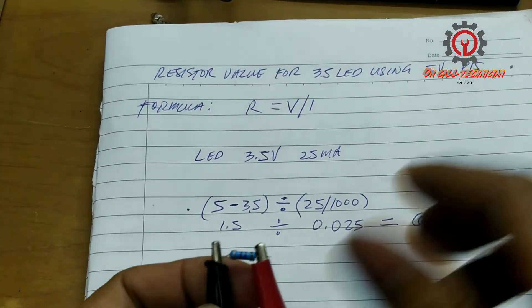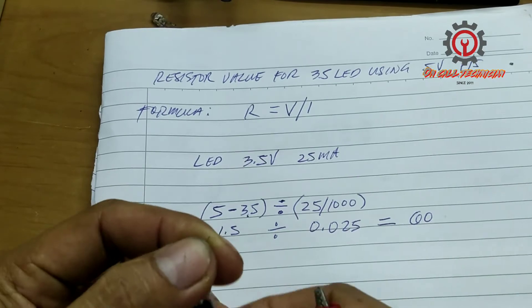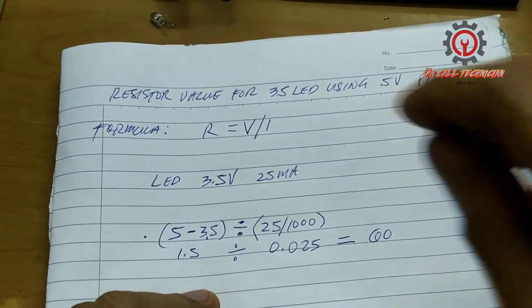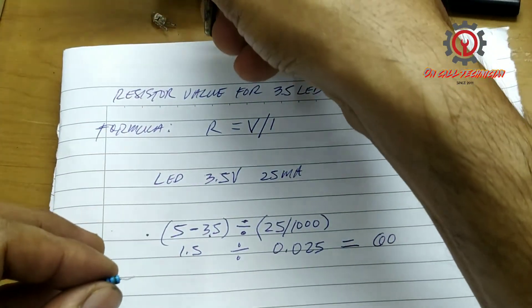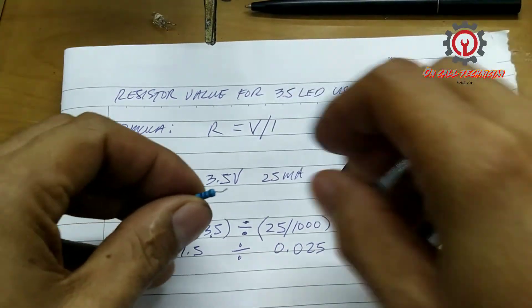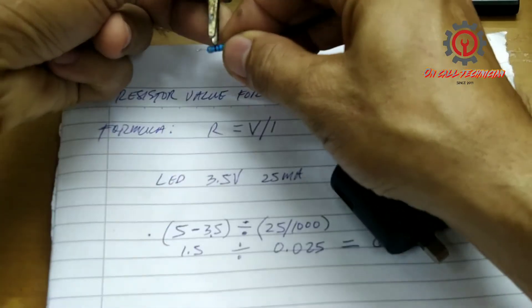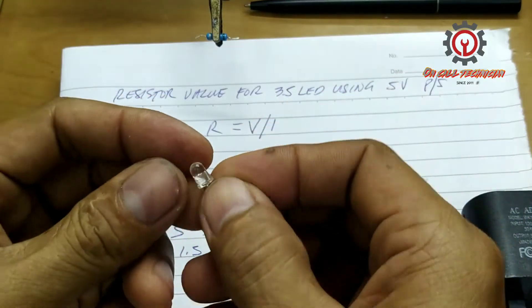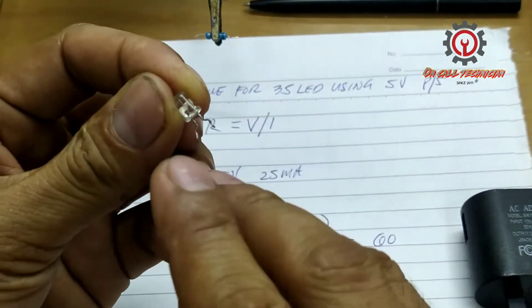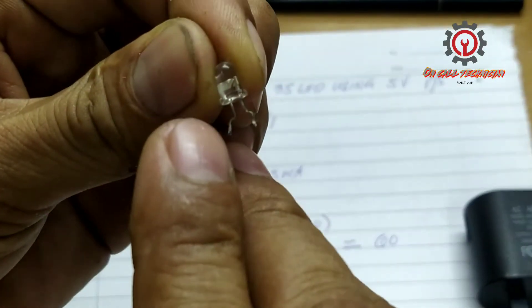Wala akong 60 guys pero meron tayong 56. Gamitin natin yung 56 na 'to para mapailaw natin 'tong ating kinompute. So yung 56 I'm going to solder to the positive. The positive here guys is this side, the bigger one.